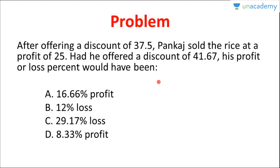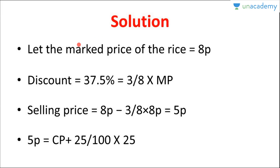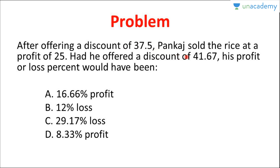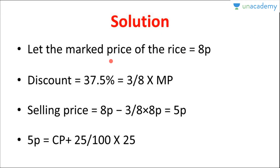Since the discount of 37.5% is always offered on the marked price, if we take the marked price as 100 rupees or X the calculation becomes heavy. Instead, we assume the marked price as 8P. We choose 8P because the discount is 37.5%, which is 3/8 — so discount = 3/8 × 8P = 3P, and the selling price = 8P − 3P = 5P.